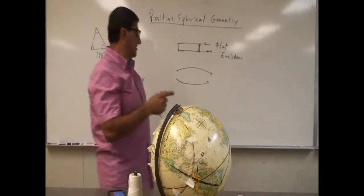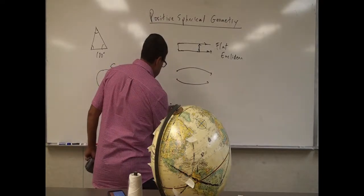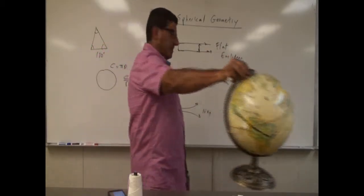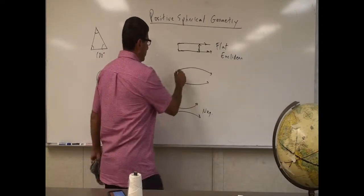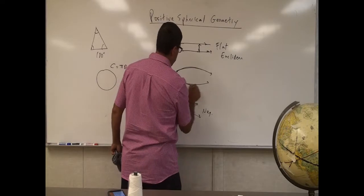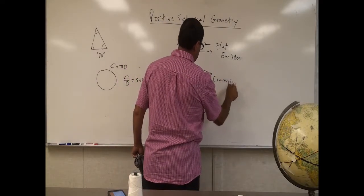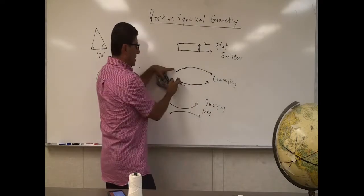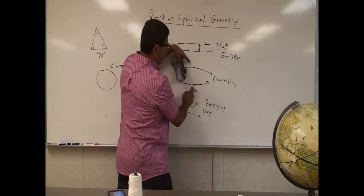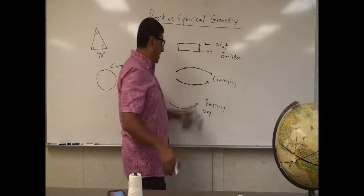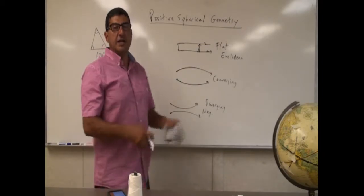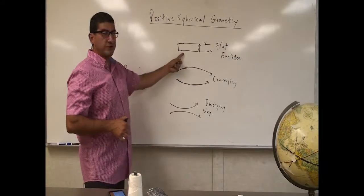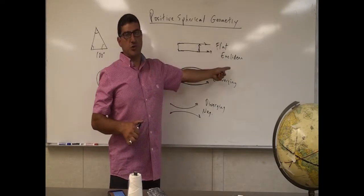In a negatively curved universe, the opposite happens — the lines will diverge outward. In a positively curved universe, parallel lines converge; in a negatively curved universe, they diverge. They will not stay parallel in either universe. We've tested this out in the universe with many different observational tests, and we've found that the universe behaves as a flat Euclidean geometry on the large scale.